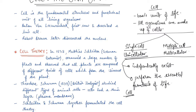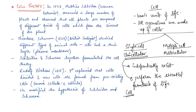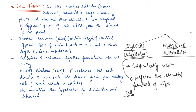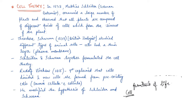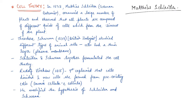The next topic is cell theory. In 1838, there was a German botanist by the name of Matthias Schleiden. He examined a large number of plants and observed that all plants are composed of different kinds of cells, which ultimately form the tissues and tissue systems in the plant.